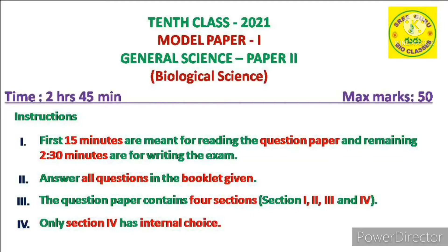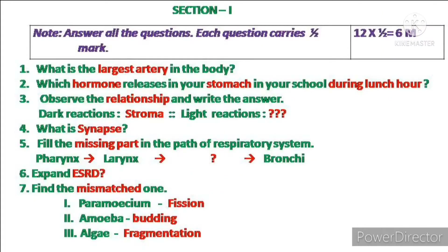Let us discuss the pattern of the question paper section-wise. Coming to Section 1, you must answer all the questions given. Each question carries half a mark. So the total marks allotted for this section is 6 marks — 12 questions multiplied by half equals 6 marks.